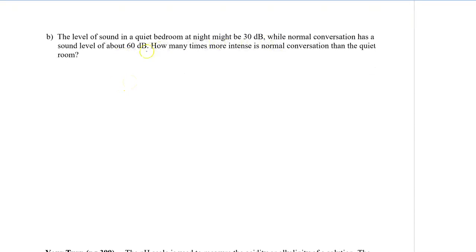Alright, so we are going to set up each of these expressions with our formula. So we have 30 is equal to 10 times log i₁ over i₀. The normal conversation is 60 equals 10 times log i₂ over i₀. Now we are trying to compare i₂ to i₁. Now remember that when we want to compare how many times more intense something is, we divide.